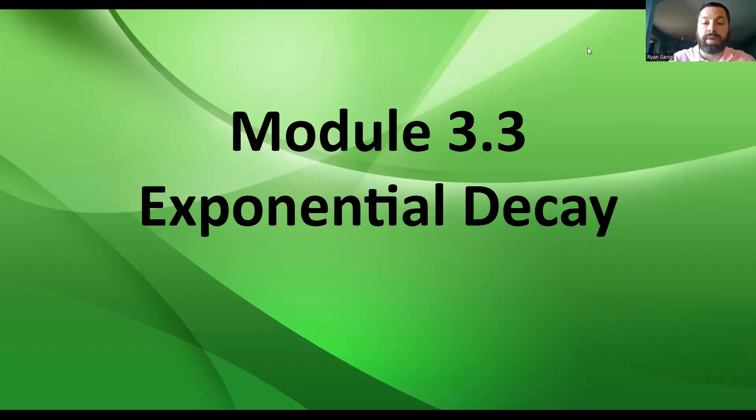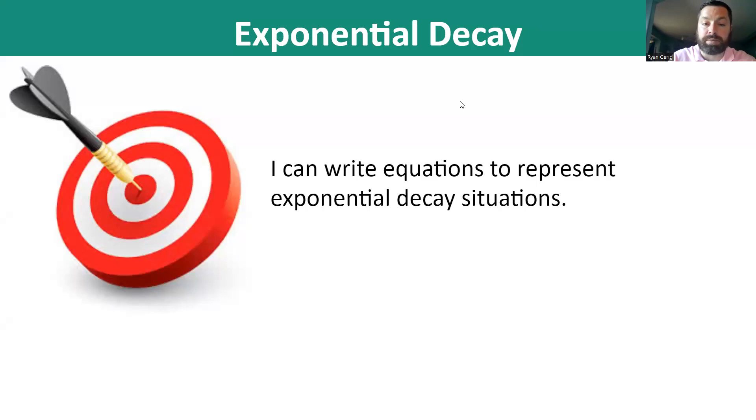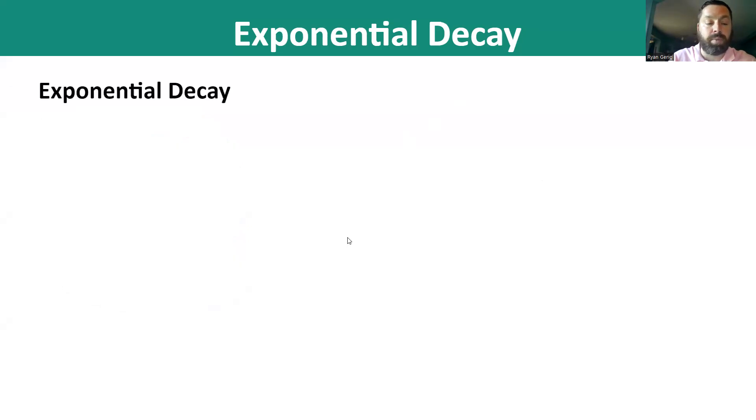Hello, and welcome to our last lesson of Module 3, Exponential Decay. Last lesson we learned about exponential growth. Today, we're going to write equations to represent exponential decay situations. So exponential decay, what is it? It is decreasing in amount by a consistent percentage over time. Just like exponential growth was increasing in amount by a consistent percentage, decay is decreasing.